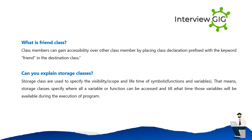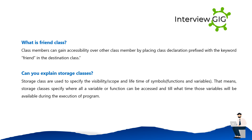What is a friend class? Class members can gain accessibility over other class members by placing a class declaration prefixed with the keyword friend in the destination class. Storage classes are used to specify the visibility, scope, and lifetime of symbols, functions, and variables — that is, where a variable or function can be accessed and until what time those variables will be available during the execution of the program.